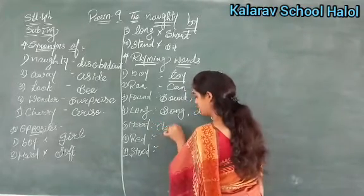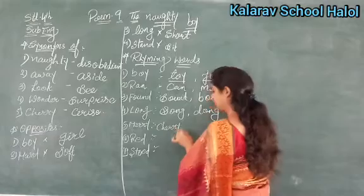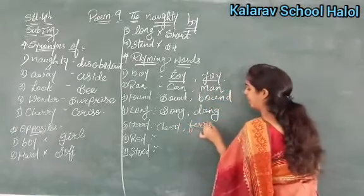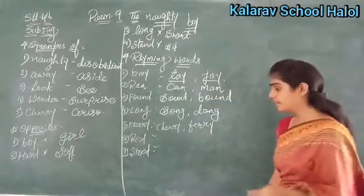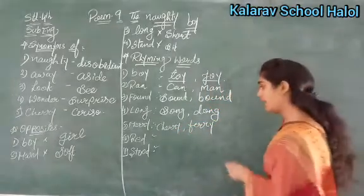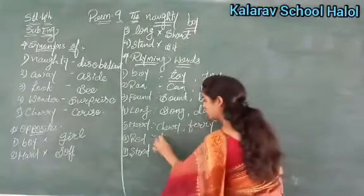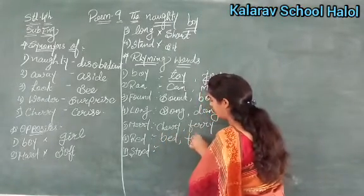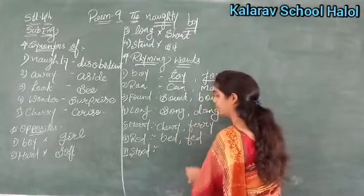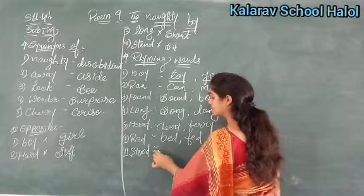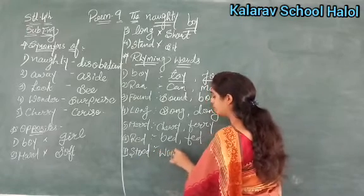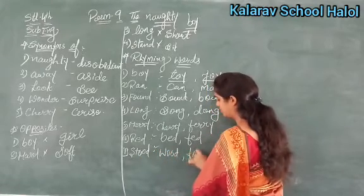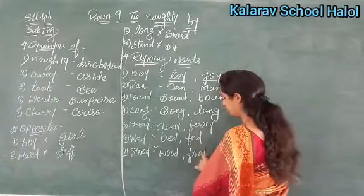So for merry: cherry and perry. Now see what is next — red. So for red: bell, fell. And the last: stood. So for stood: wood, and food. Clear?